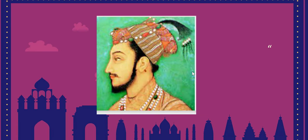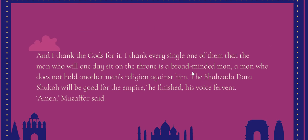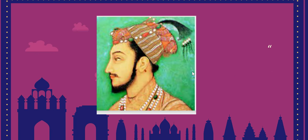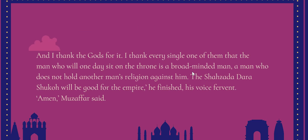If history had turned out differently, both Sarmad Kashani and Dara Shikoh would be much better known today. In the novel, it is expected that Dara Shikoh is going to be king, and Sarmad Kashani is becoming increasingly popular. But as readers belonging to the 21st century, we know this is not how history turned out — so the ending carries deep irony. The last part of the novel shows Muzaffar Jung and Suraj Bhan talking and thanking god for the fact that Shahzada Dara Shikoh will be good for the Empire.